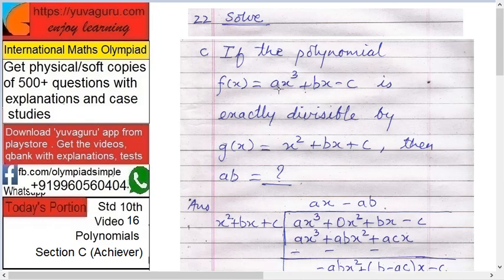If the polynomial f(x) equals to ax³ + bx - c is exactly divisible by g(x) equals to x² + bx + c, then ab equals to. See here, this is a dividend, this is a divisor. Always in both the cases, always remember the degrees of x should be in a linear fashion. So after x³, there should be x². Is there x square over here? No. So you will be facing a problem. Similarly in divisor.